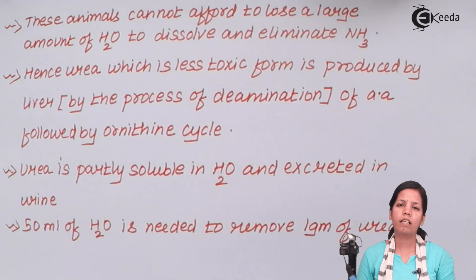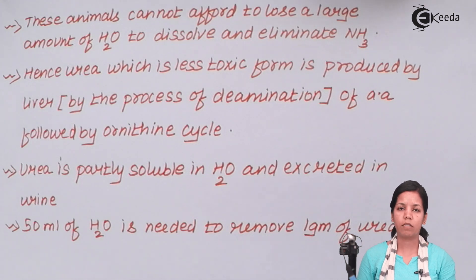So students today in this part of the chapter we did study about ureotelic organisms, how they function and how shortage of water has led them to produce an excretory product termed as urea. Since ammonia is not something which they can afford to produce which will cost them heavily on water, since ammonia needs lot of water to be dissolved and thrown out of the body. So students I hope we are very clear with this concept. Thank you.